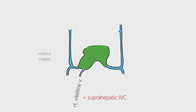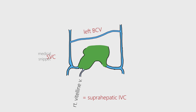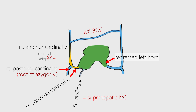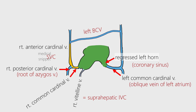An oblique connection develops between the two anterior cardinal veins, forming the left brachiocephalic vein. The superior vena cava is formed from the right anterior cardinal vein along with the right common cardinal vein. The right posterior cardinal vein forms the root of the azygos vein. The regressed left horn of sinus venosus forms the coronary sinus. The left common cardinal vein forms the oblique vein of the left atrium.